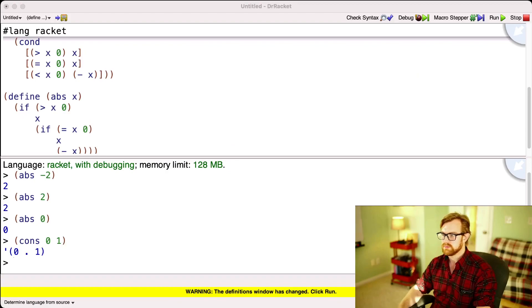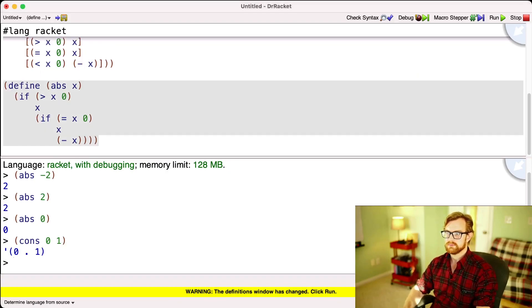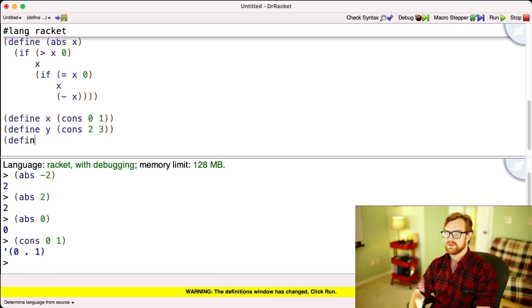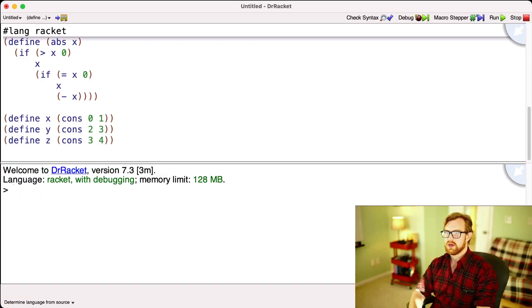So let's go through some examples. I can define x to be cons 0 1. I can define y to be cons 2 3. I can define z. These are all just pairs. 3 4. So how do I get the first element of x? Or how do I get the x component of the coordinate x, y representation of x? Well, I can do car of x. How do I get the right component of x? Well, I can do the cdr of x. What about the left component of y? Car y.